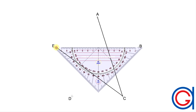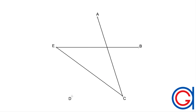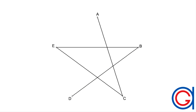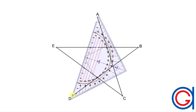Now we will join vertex E to vertex B, skipping vertex A. And vertex B to vertex D, skipping vertex C. And finally, we will join vertex D to vertex A, skipping vertex E.